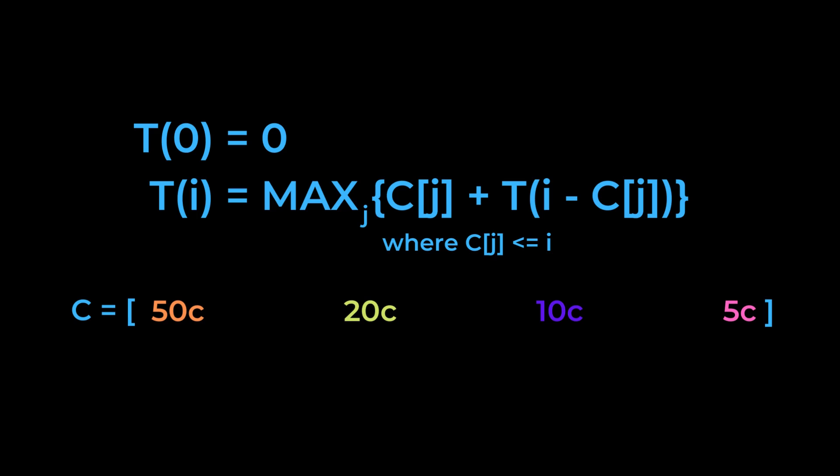First, we're going to set up the base case. The most change we can make for 0 is 0, and this is independent of the denominations available to us. For i greater than 0, we're going to look back at each type of coin available, and look back at the sub-problem solution assuming we take that coin. We can then take the max across those coins.